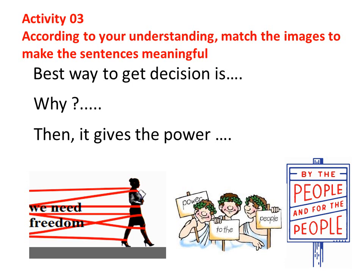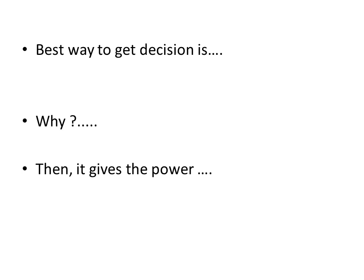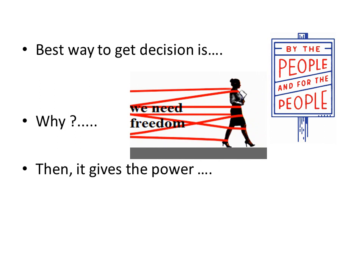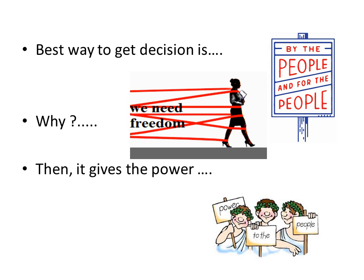According to your understanding, you can do activity 3. Match the images to make the sentences meaningful. The best way to get decisions is — why? Then it gives the power. Let's see the answers. Best way to get a decision is by the people and for the people. Why? We need freedom. We do not like to be bound by some other people or their rules.